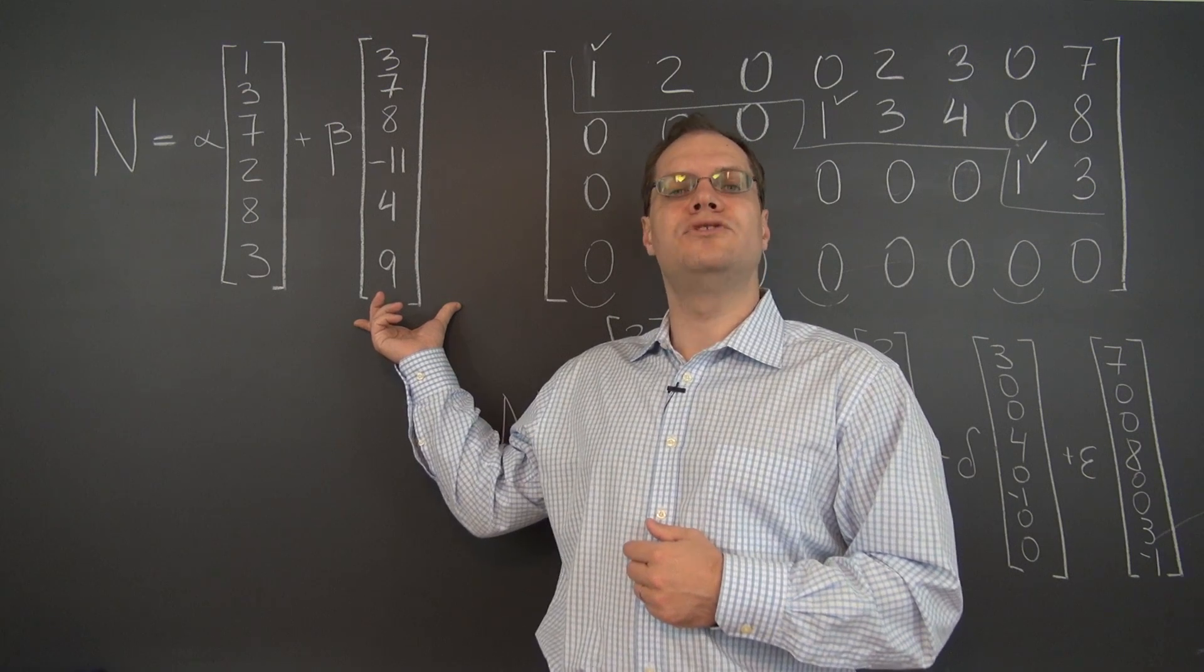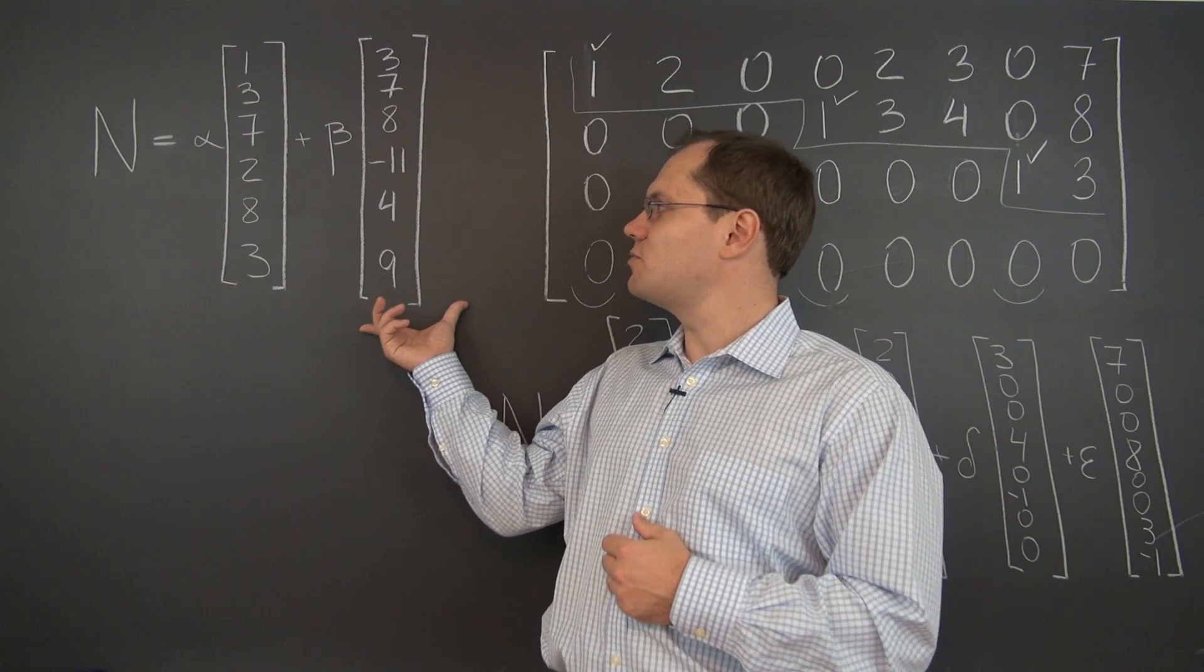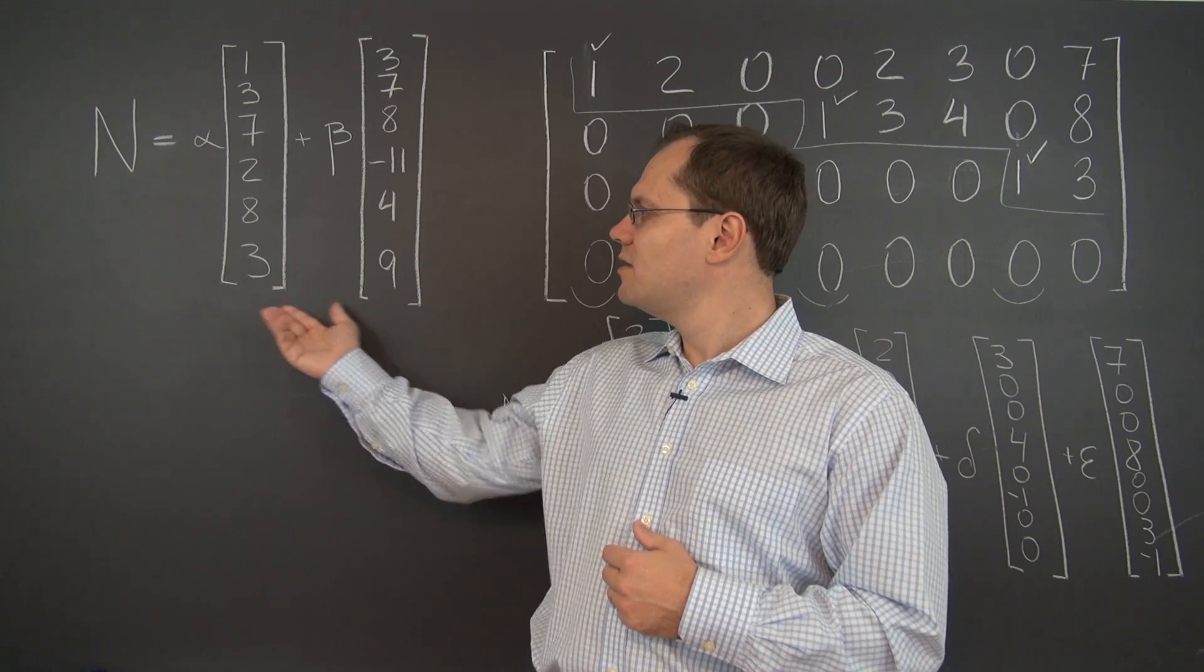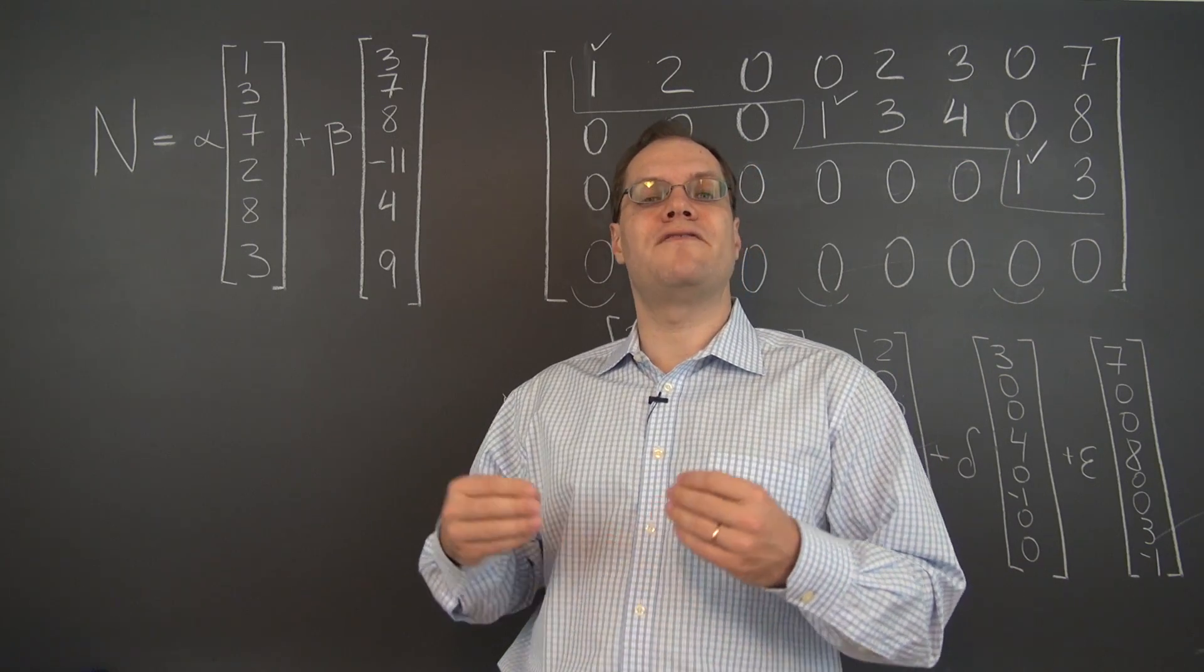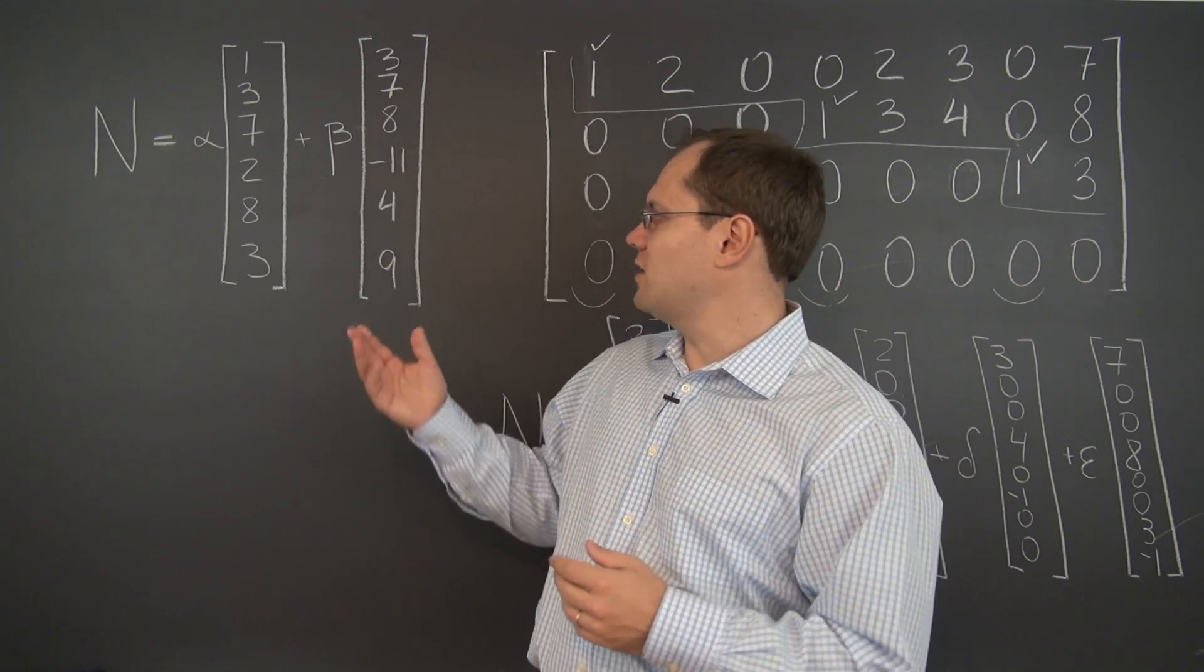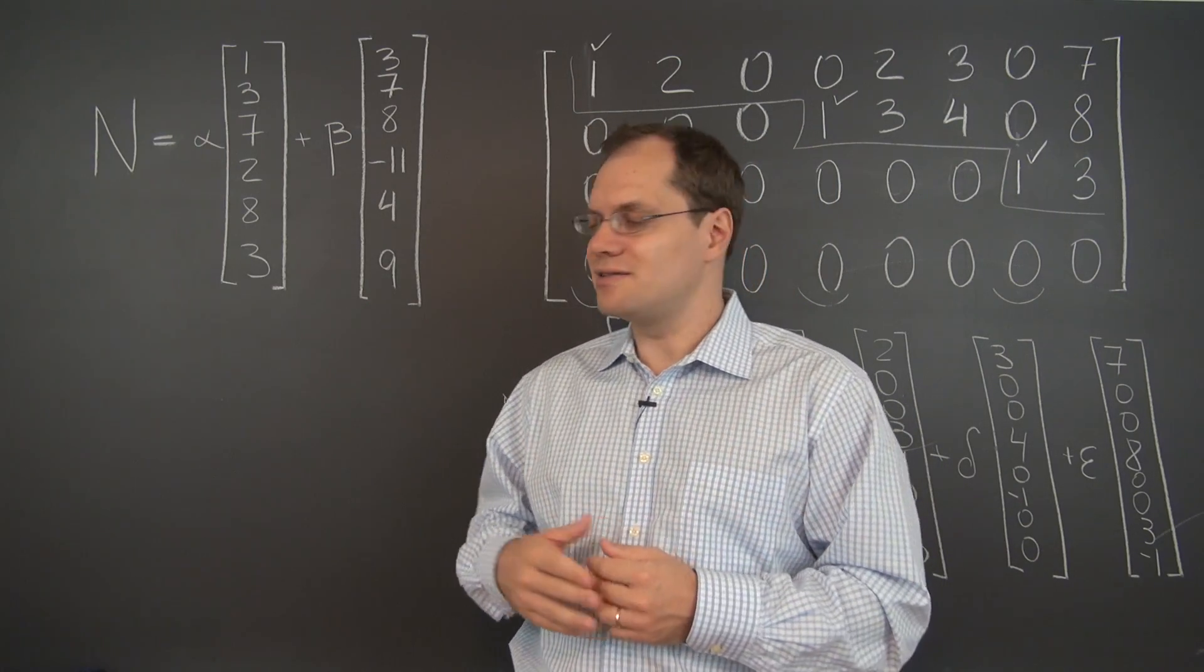Then would you be able to determine the row reduced echelon form of the matrix from the null space? This could be a perfectly legitimate way to define the null space. In fact, to specify any space in R6,